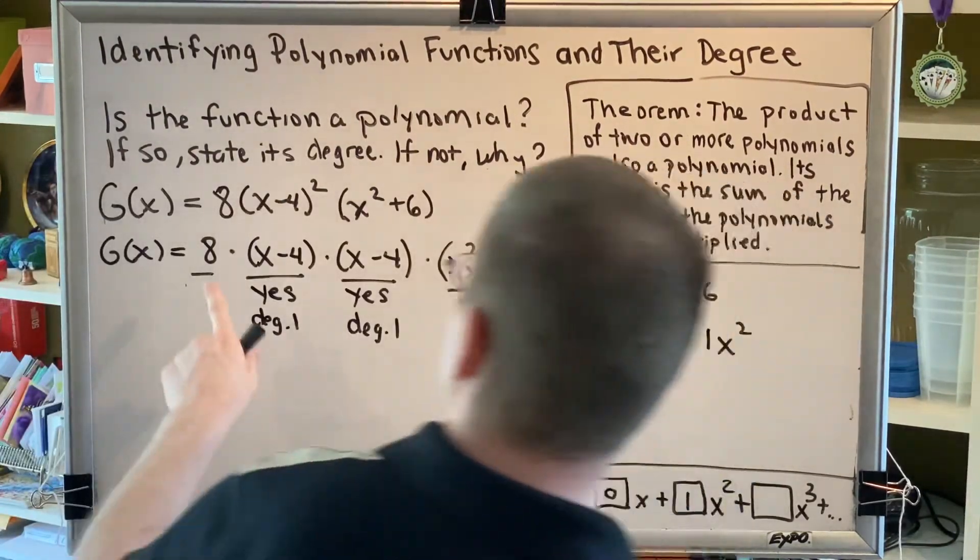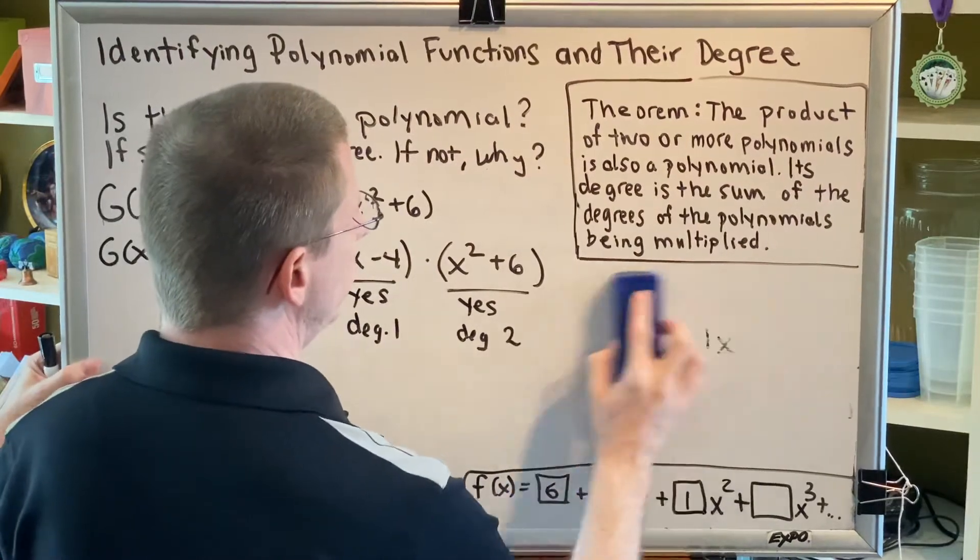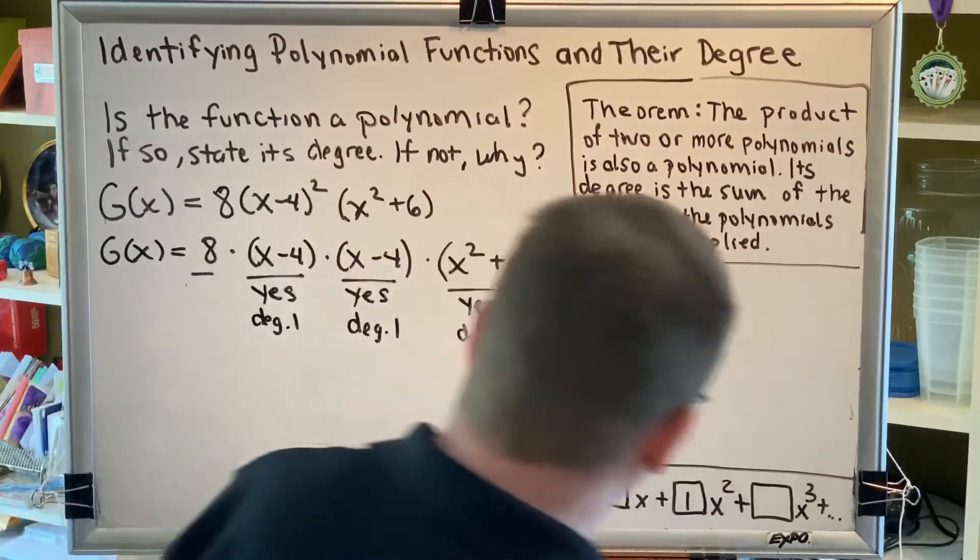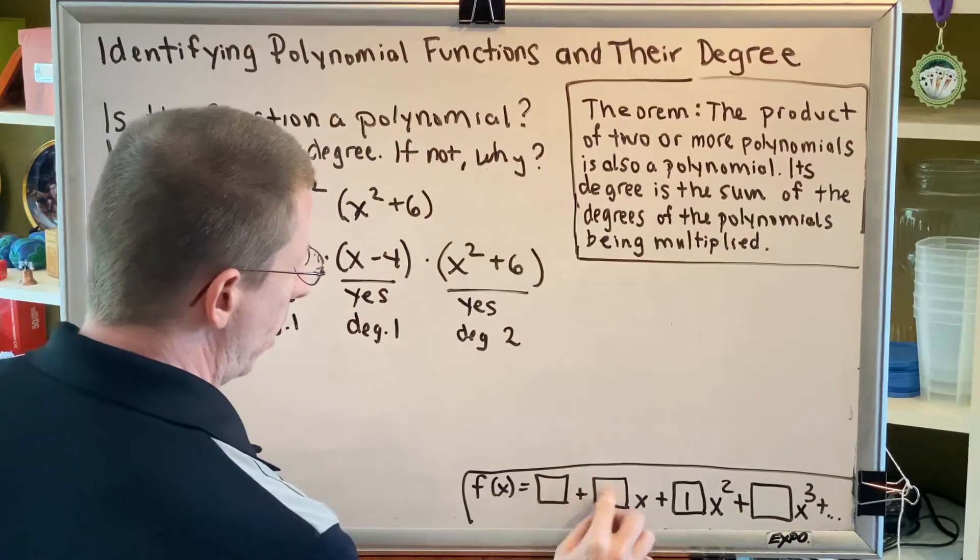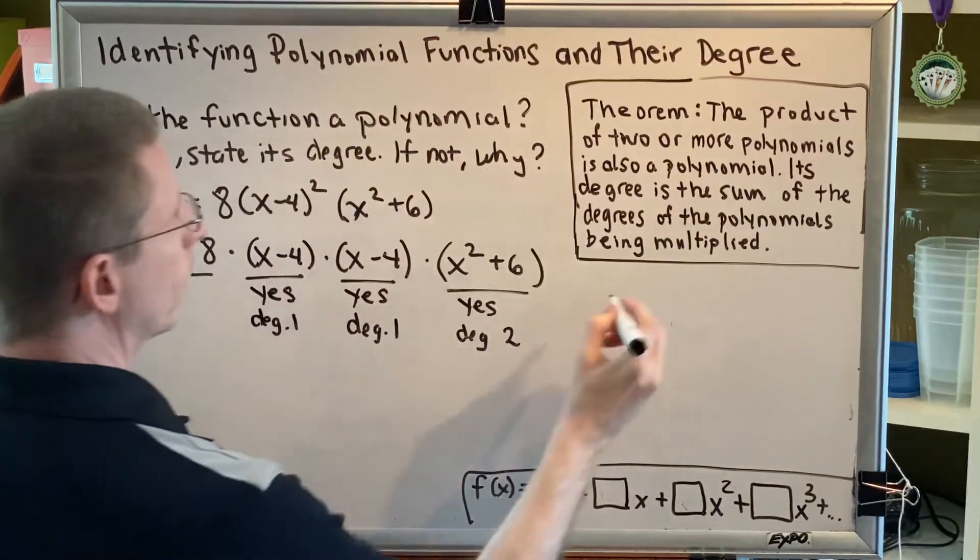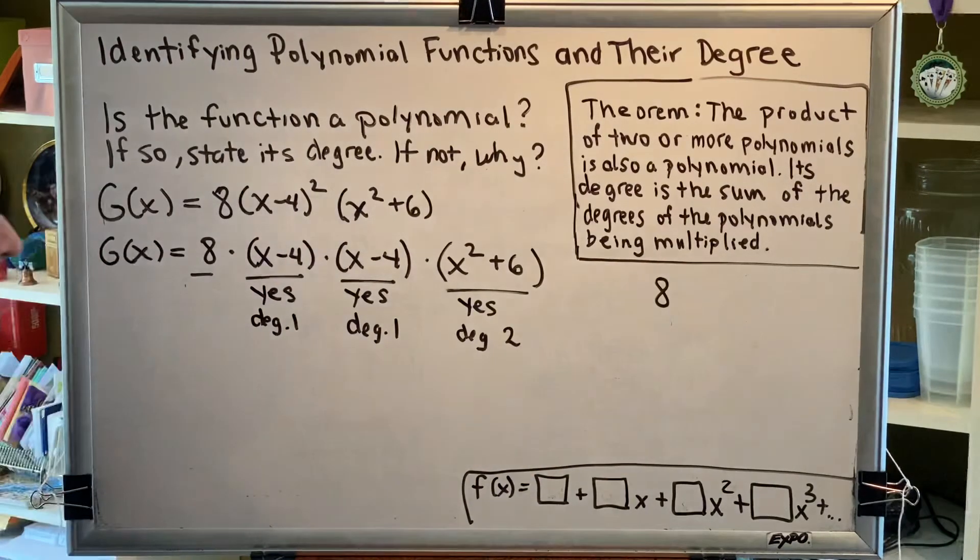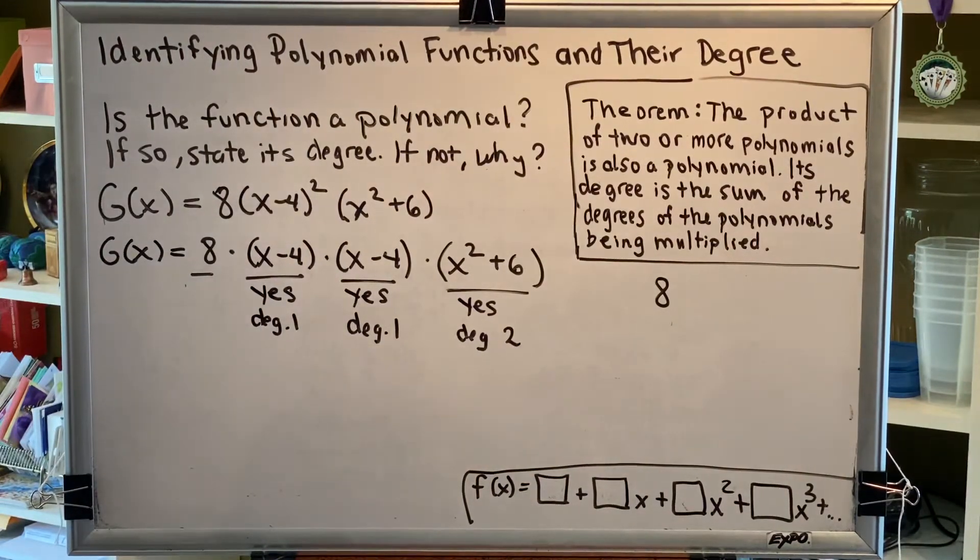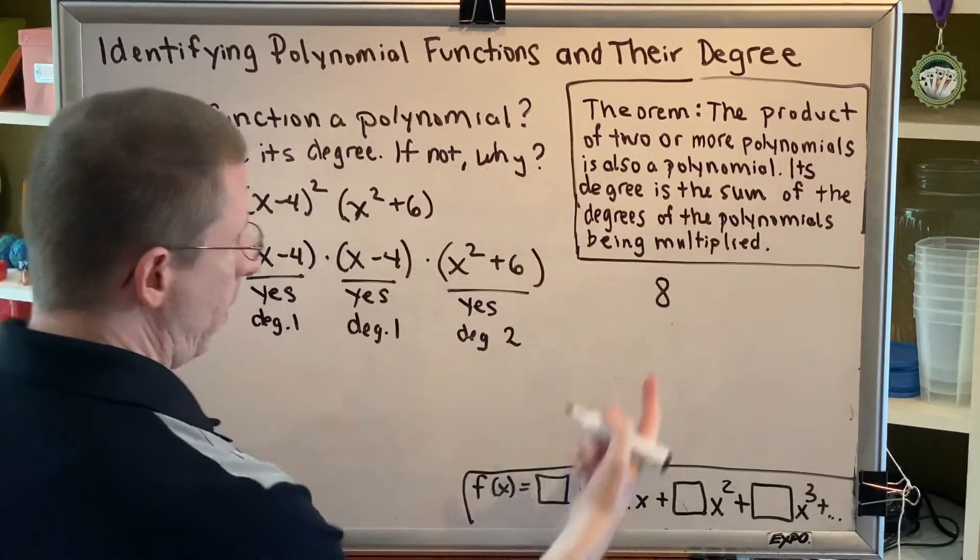All right, only one left to go, which is the number 8. So is 8 a polynomial? The answer may surprise you. 8 is a polynomial. Even though it's just a single number, it meets the definition of a polynomial. It can be written in this form.